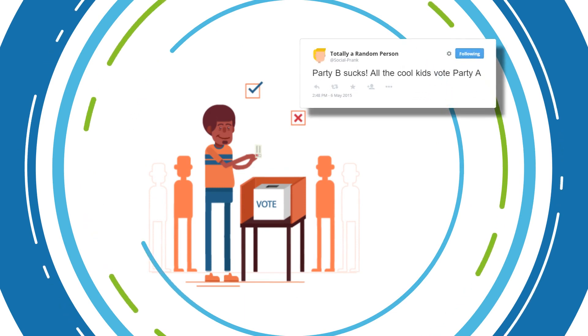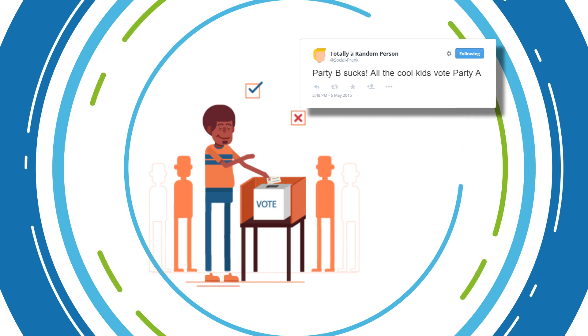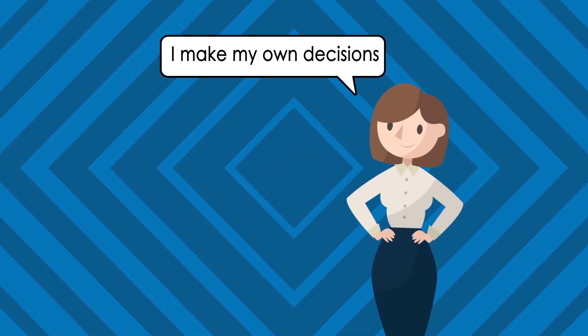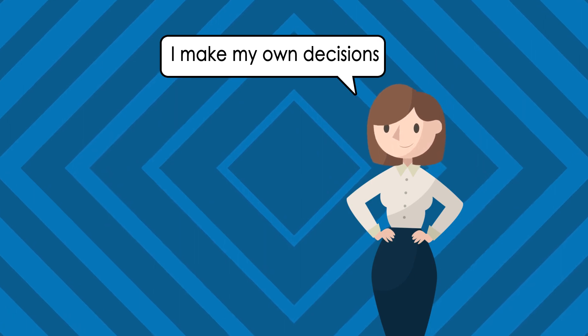For example, they could cause people to oppose one political group in favor of another, or they could incite political action. And all of this would happen without the masses even being aware that they are being influenced at all.